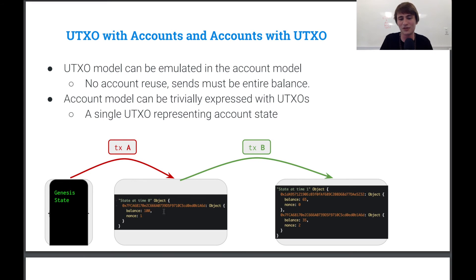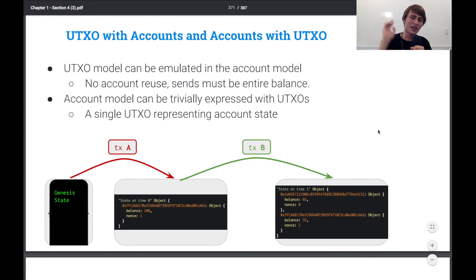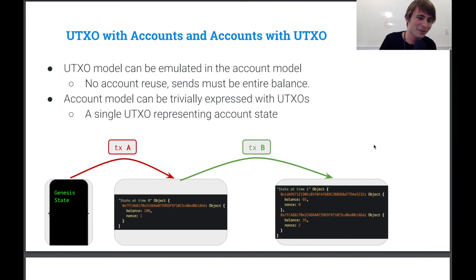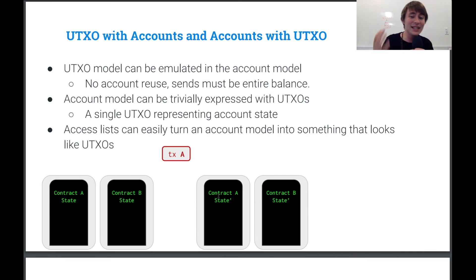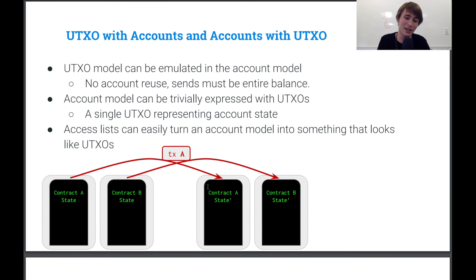Then also, access lists can easily turn an account model into something that looks like UTXOs. So we can basically say, okay, each contract is a UTXO, and the state of that contract is just stored like the balance was stored in each UTXO from before, and then we have transactions that spend those UTXOs and generate new ones, and those represent our state at the next step in our application.